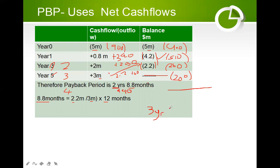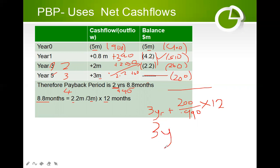To find the months, we say 200,000 divided by 990,000 and multiply by 12 to get the number of months. The answer is approximately two months. So our payback period is three years and two months.